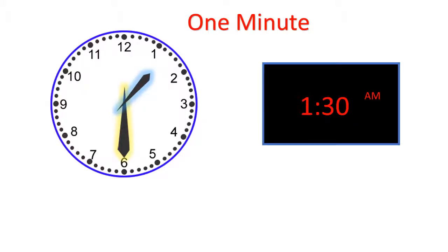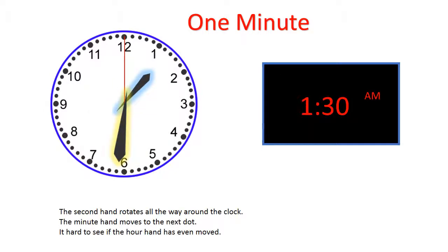One minute. The second hand rotates all the way around the clock. The minute hand moves to the next dot. It's hard to see if the hour hand even moved.